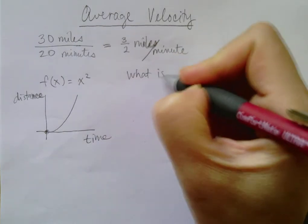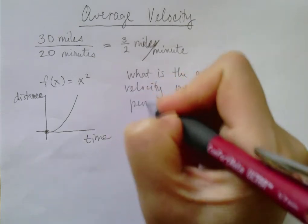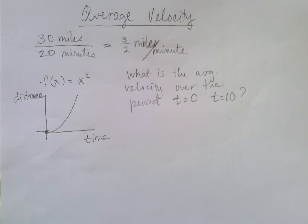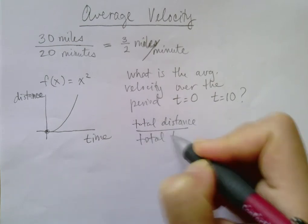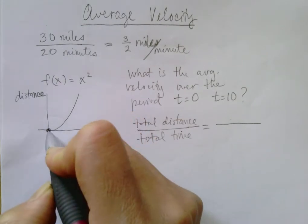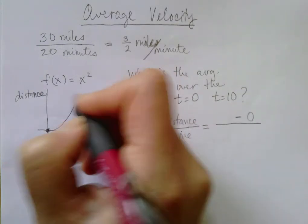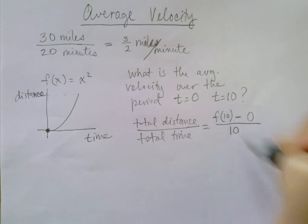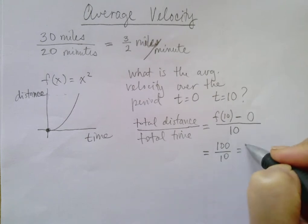What is your average velocity over the period? Let's say t equals zero to t equals 10. Again, you're going to do the same thing: total distance over total time. What is the total distance? Well, in the beginning you were at y value 0, and at the end you were at y value f of 10. The total time traveled was 10 seconds. So what is f of 10? f of 10 is 100 over 10 seconds equals 10.